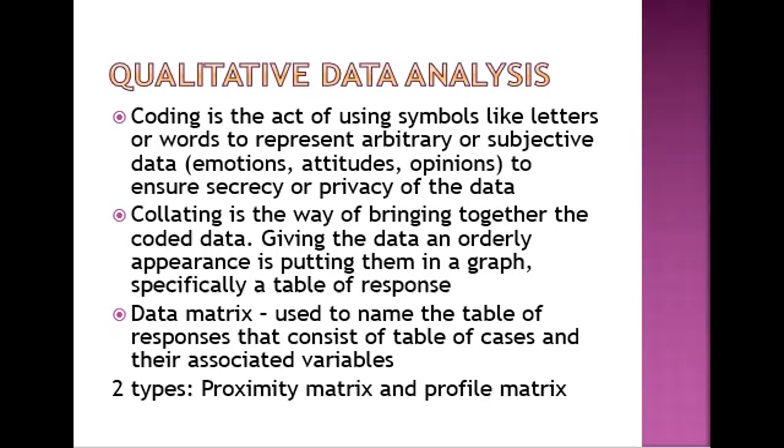In analyzing the data for qualitative research, you go through coding and collating. Coding is the act of using symbols like letters or words to represent your data like emotions, opinions, or attitudes. Collating, on the other hand, is your way of bringing together the coded data. Giving the data an orderly appearance is putting them in a graph, specifically a table of response. You can create a table there with the codes you placed per data you collected. What's the code of the first emotion? What's the code of the second experience? It depends on you as a researcher. Data matrix is used to name the table of responses that consists of table of cases and their associated variables.